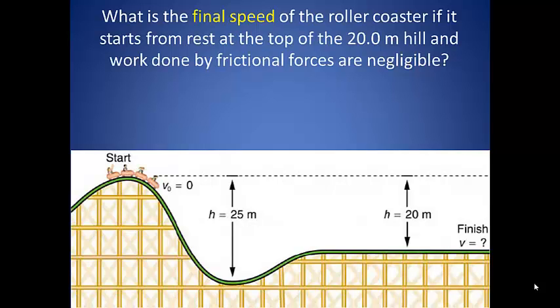Say we have a roller coaster that starts at the top of a hill and ends on a flat surface 20 meters below the top of that hill. What is the final speed of the roller coaster if it starts from rest at the top and work done by frictional forces are negligible?